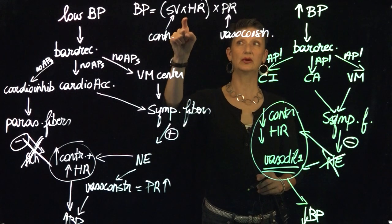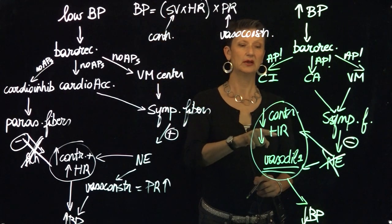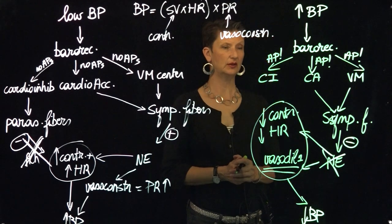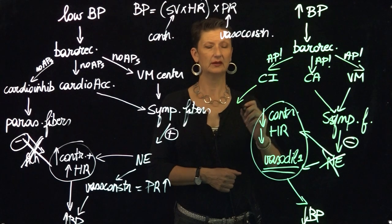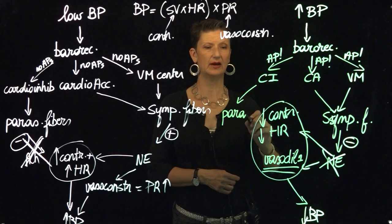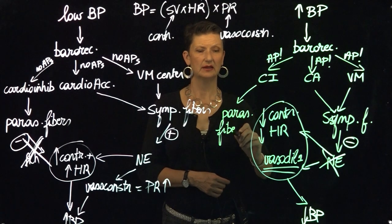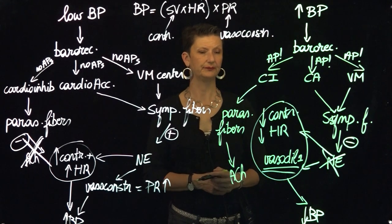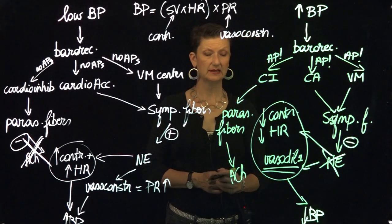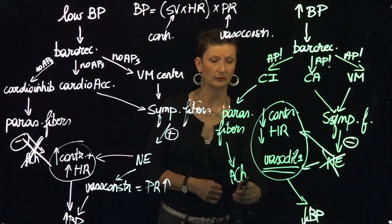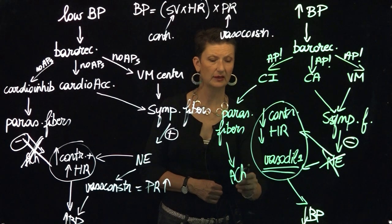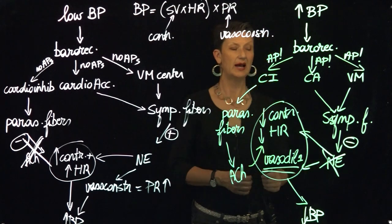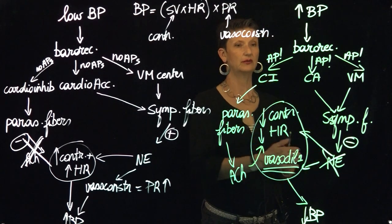Come back to your formula — contractility impacts stroke volume, and then of course we have our heart rate. So finally, what about the cardioinhibitory center? Remember, it is going to communicate with parasympathetic fibers, and they secrete acetylcholine. Acetylcholine acts inhibitory on the heart. And so we're going to see the same impact here as the inhibition of the sympathetic fibers.